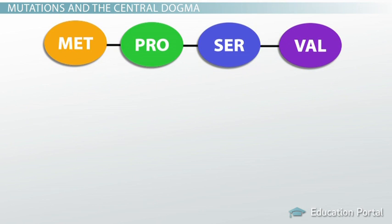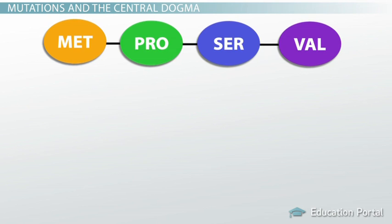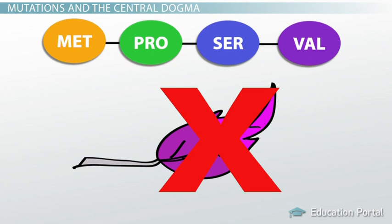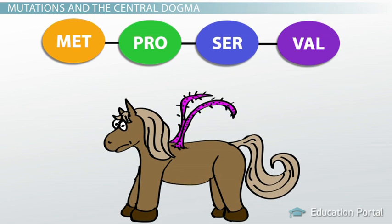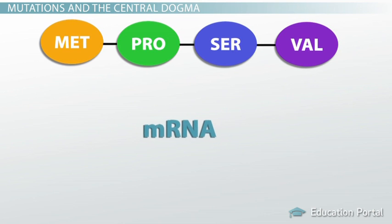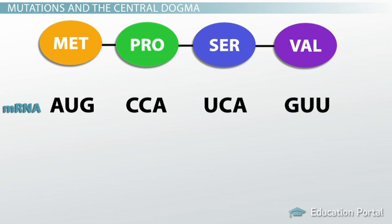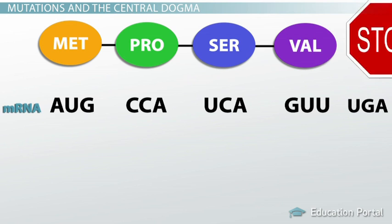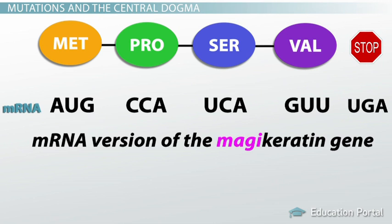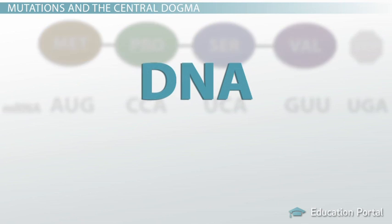These four amino acids happen to be in alphabetical order. They must be built correctly by genetic translation, otherwise the pony's magic keratin won't be properly synthesized and the pony may even lose its ability to fly. The amino acids are translated from the mRNA code. The genetic code for magic keratin is AUG, CCA, UCA, GUU, UGA — where UGA is a stop codon. This mRNA came originally from DNA, so to find the original DNA code we use complementary base pairing, replacing U with T.